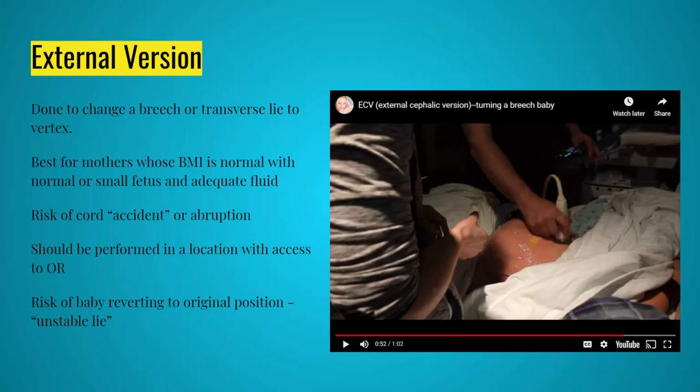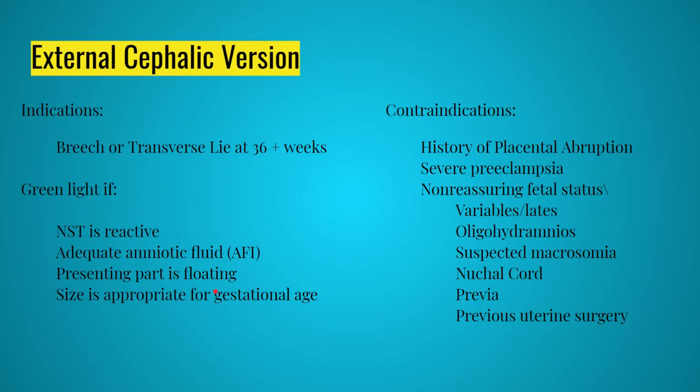When a mom has had a version at 36 weeks and is coming in to be induced, they really should confirm position with ultrasound first. Indications: breech or transverse lie, at least 36 weeks gestation, reactive fetal heart rate on non-stress test — at least 15 beats per minute for 15 seconds each in a 20-minute period — adequate amniotic fluid, presenting part not engaged (should be floating), and fetal size appropriate for gestational age. It should not be a baby with intrauterine growth restriction or one who is macrosomic.